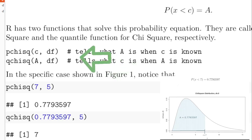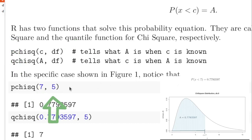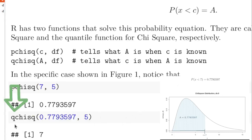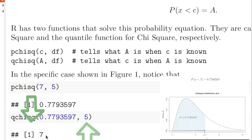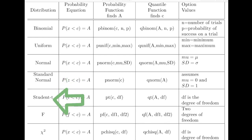Luckily, R has two functions. One is called a probability function — p chi-squared of 7 with 5 degrees of freedom returns a value of nearly 78%. R also has a quantile function — q chi-squared of that area with 5 degrees of freedom returns a value of 7. There is a probability function and a quantile function for each probability distribution we have studied, named to help remind you which distribution they work with.